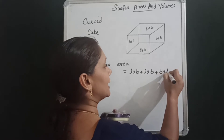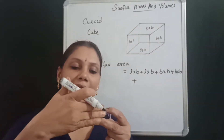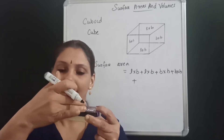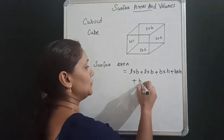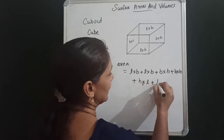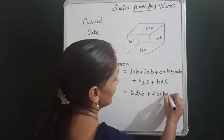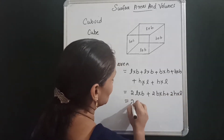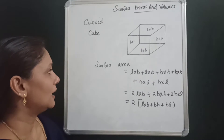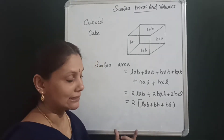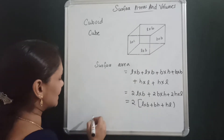On the back and front faces, this is L and this is H, so that face area is H×L. So we have H×L plus H×L plus H×L terms. Collecting all: 2L×B plus 2B×H plus 2H×L, then taking 2 as common: 2(LB + BH + HL). So the total surface area is 2(LB + BH + HL).